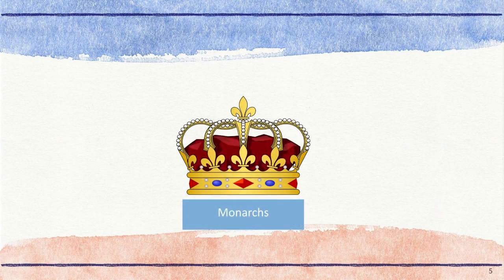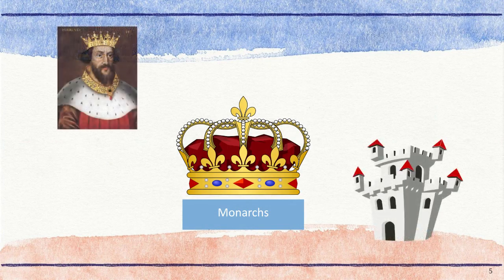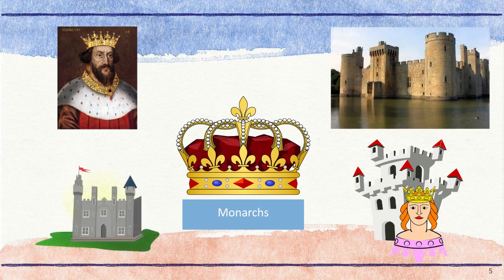The monarchs, or kings and queens, were the most important and powerful of all the people. They ruled large amounts of land and people. The king's family was powerful and protected. Power was usually passed down to the next generation in royal families.